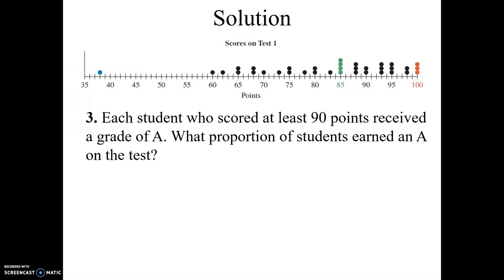Each student who received at least 90 points received a grade of A. What proportion of students? Now here the keyword is proportion. We're not just asking for the number of people. We're asking for the proportion of people who earned an A. So first we got to count how many students received above 90. So at least 90 means it could be 90 or higher. So we have one, two, three, four, five, six, seven, eight, nine, 10, 11, 12, 13.